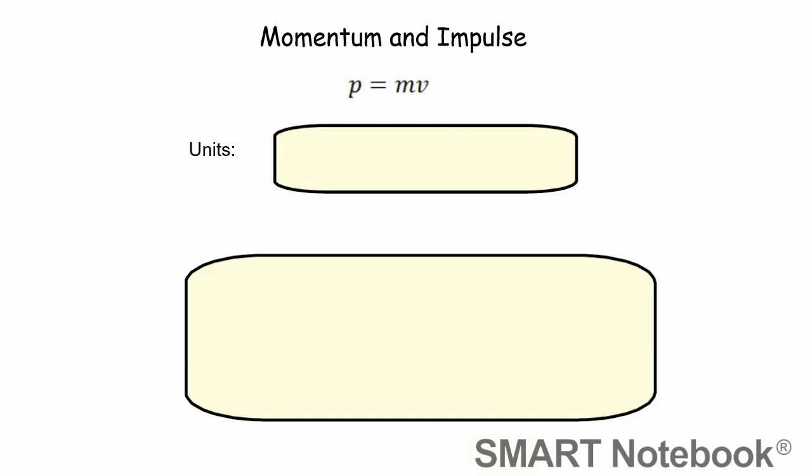To start off with, momentum is symbolized with the lowercase letter p because m usually stands for mass. Momentum is equal to the product of mass times an object's velocity, p = mv. We'll talk about where this concept comes from in just a moment.